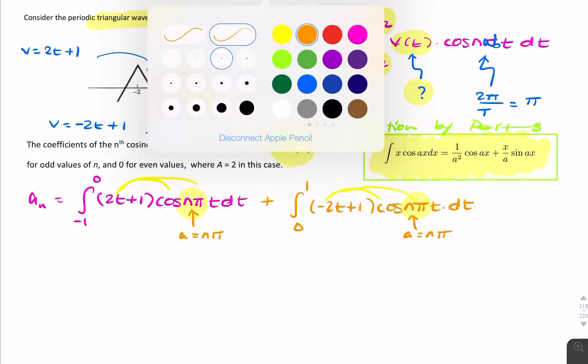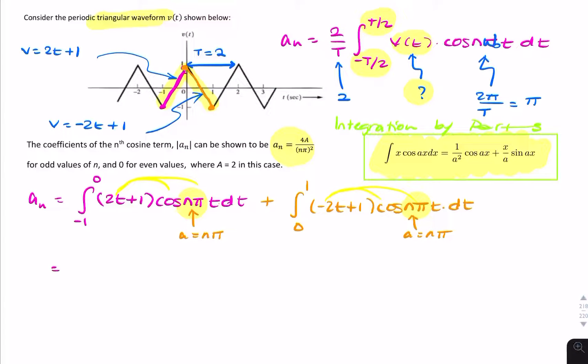So now we can write a n as 1 over a squared, and there's a 2, so it becomes 2 over n pi squared times cosine ax, so n pi x. In this case x is t, plus the integral of cosine, which is simply sine, n pi t, divided by n pi.